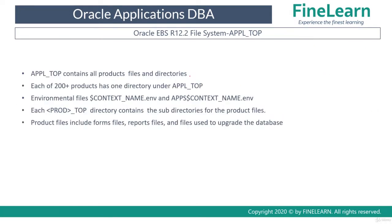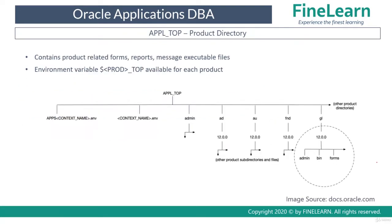APPL_TOP contains all product-related files and directories, so each of the 200+ products has one directory under APPL_TOP. Each product top contains different directories holding product-related forms, reports, and other files such as message files. Taking any one product directory as an example, the GL product directory contains subdirectories such as forms, which holds all forms related to General Ledger, along with other directories specific to that product.